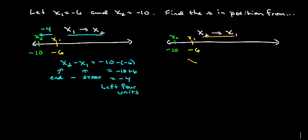Now here we're going from x2 to x1. So we want to take x1 minus x2. Again, our end point minus our start point. So that's negative 6 minus negative 10, which is negative 6 plus 10, which is positive 4.